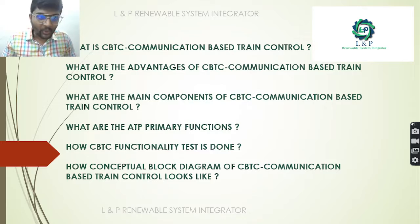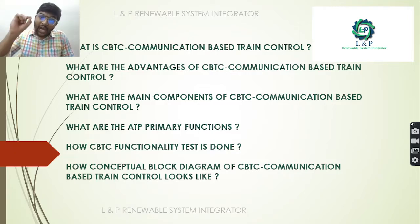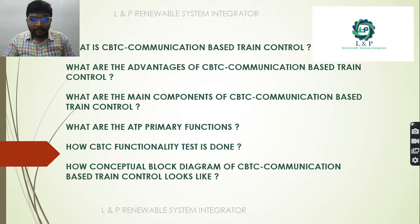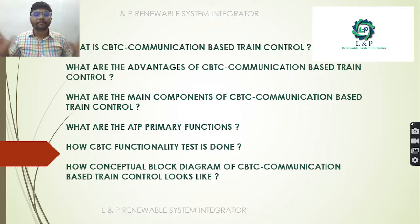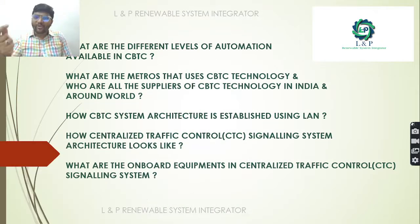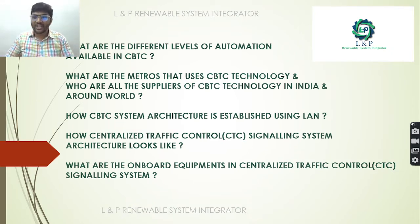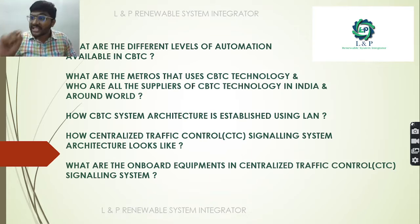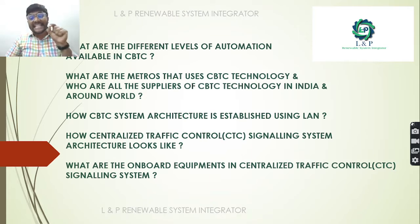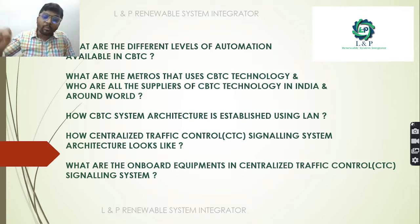In part 2 we will cover: what is CBTC, its advantages, the main components, the primary functions of ATP, how the CBTC functionality test is done, the conceptual block diagram, the different levels of automation, which metros use CBTC, the suppliers of CBTC technology in India and worldwide, how CBTC system architecture is established using LAN, and the onboard equipments in CTC — that is Centralized Traffic Control — signaling system.